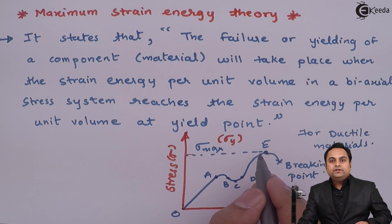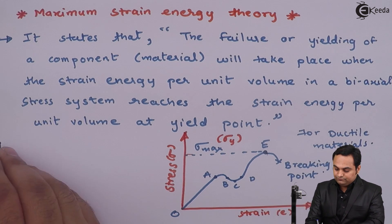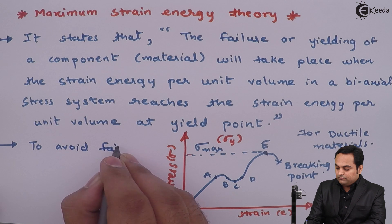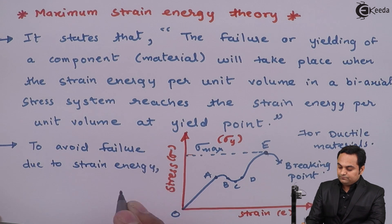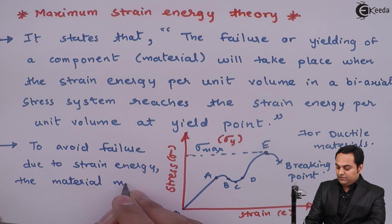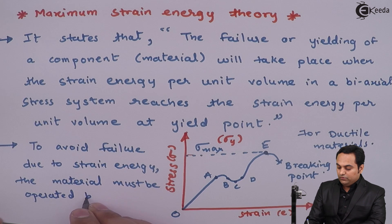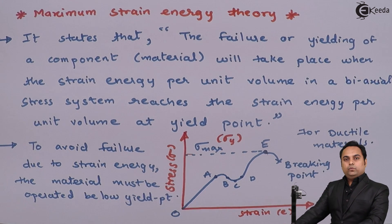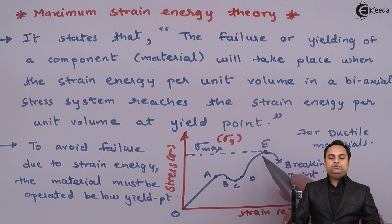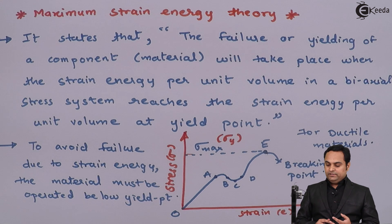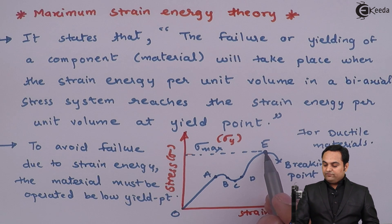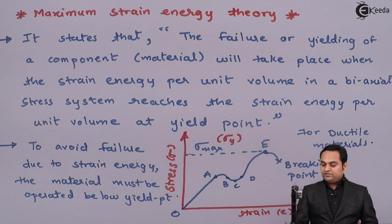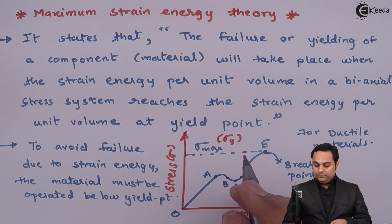If the strain energy stored in the material reaches the value at maximum stress, then the material will fail. So to avoid failure due to strain energy, the material must be operated below the yield point. If the stress inside the material increases and reaches the maximum stress value, then after point E it can break anywhere — that is the breaking point. So we need to avoid the material crossing this maximum stress value.